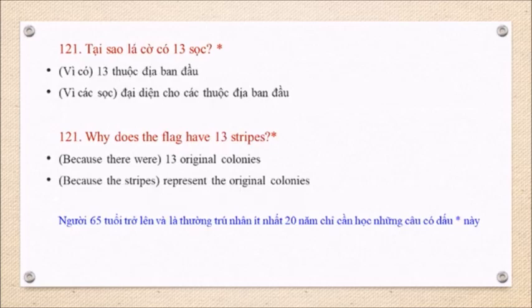Question 121: Why does the flag have 13 stripes? Because there were 13 original colonies. Because the stripes represent the original colonies.